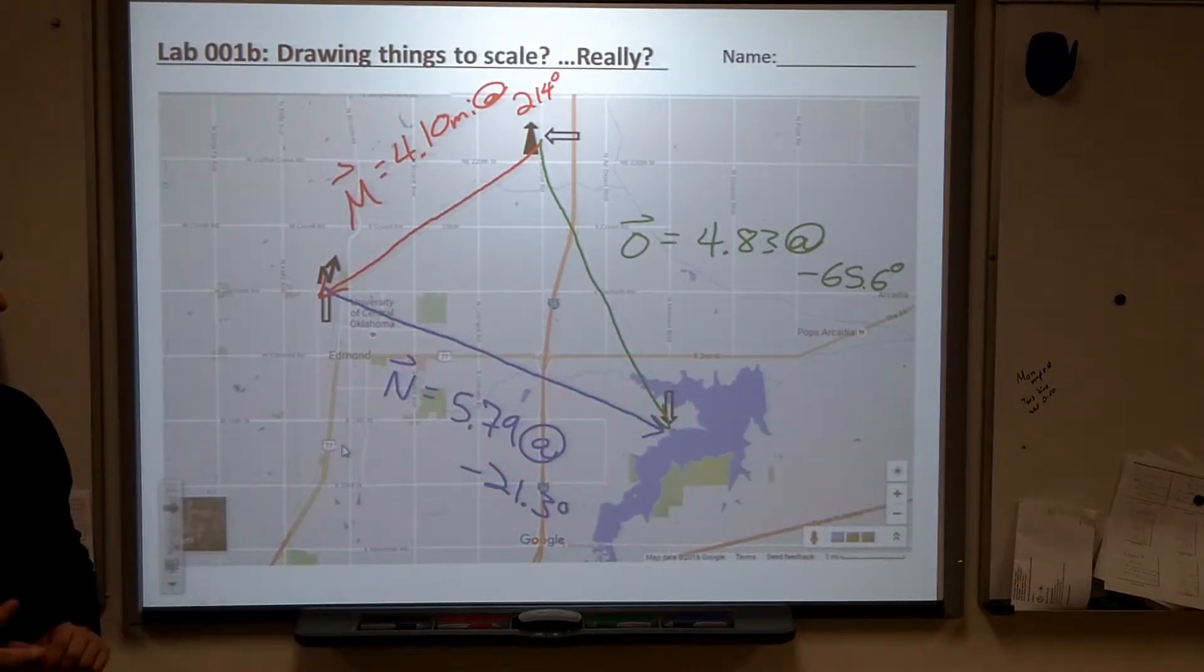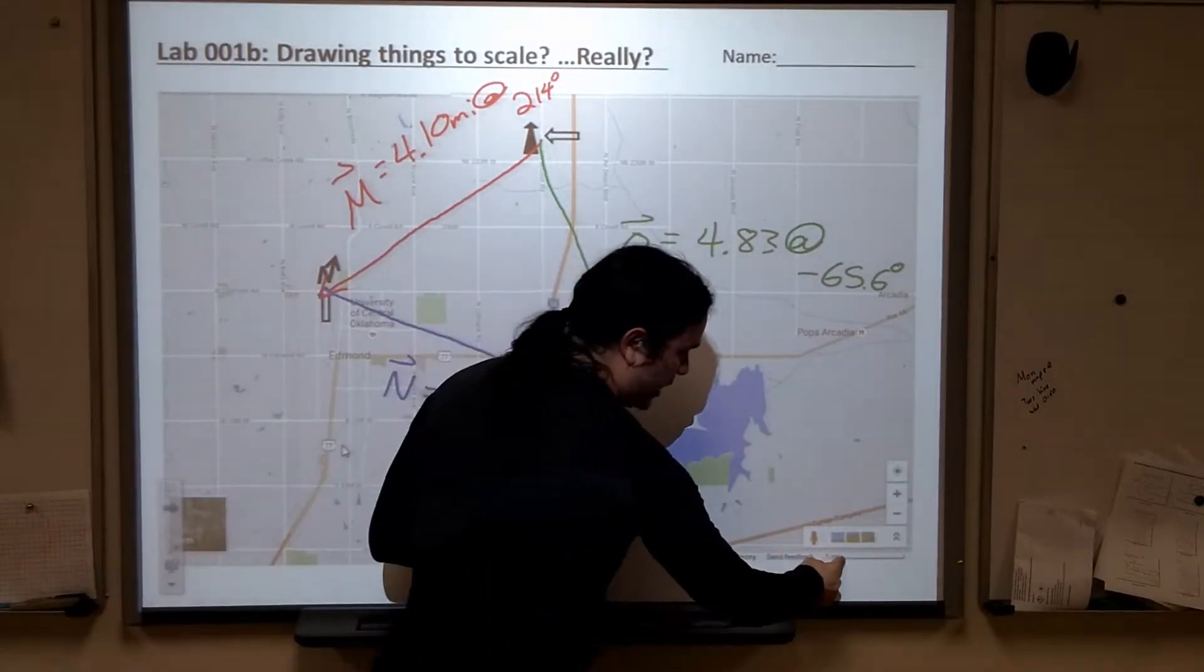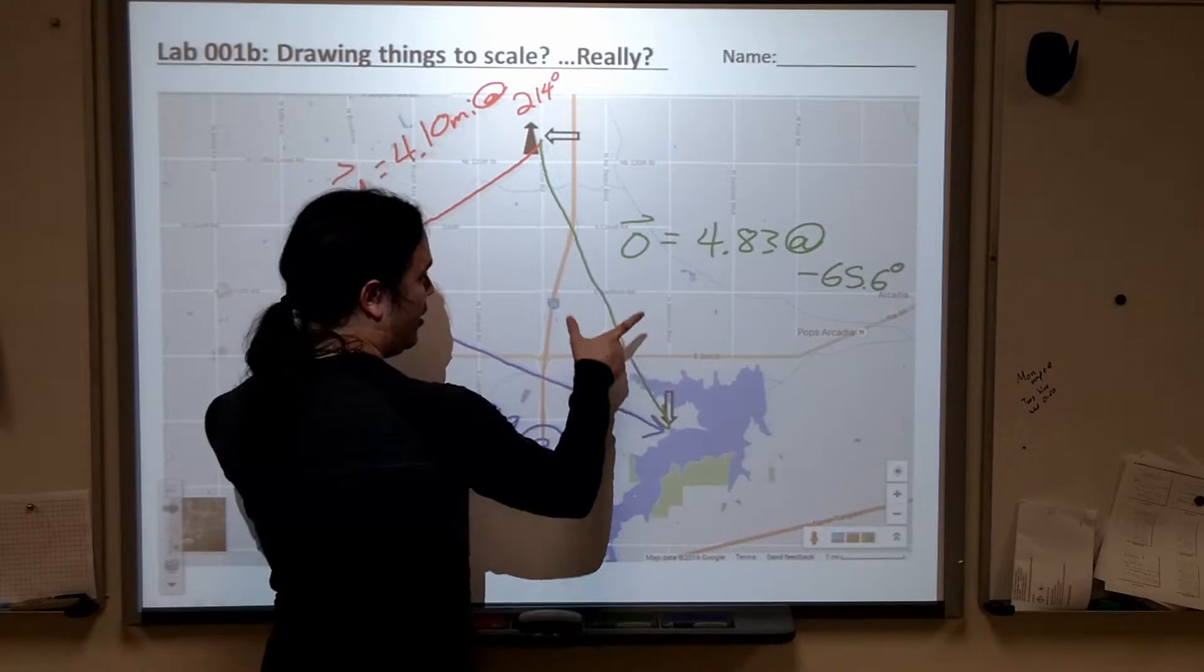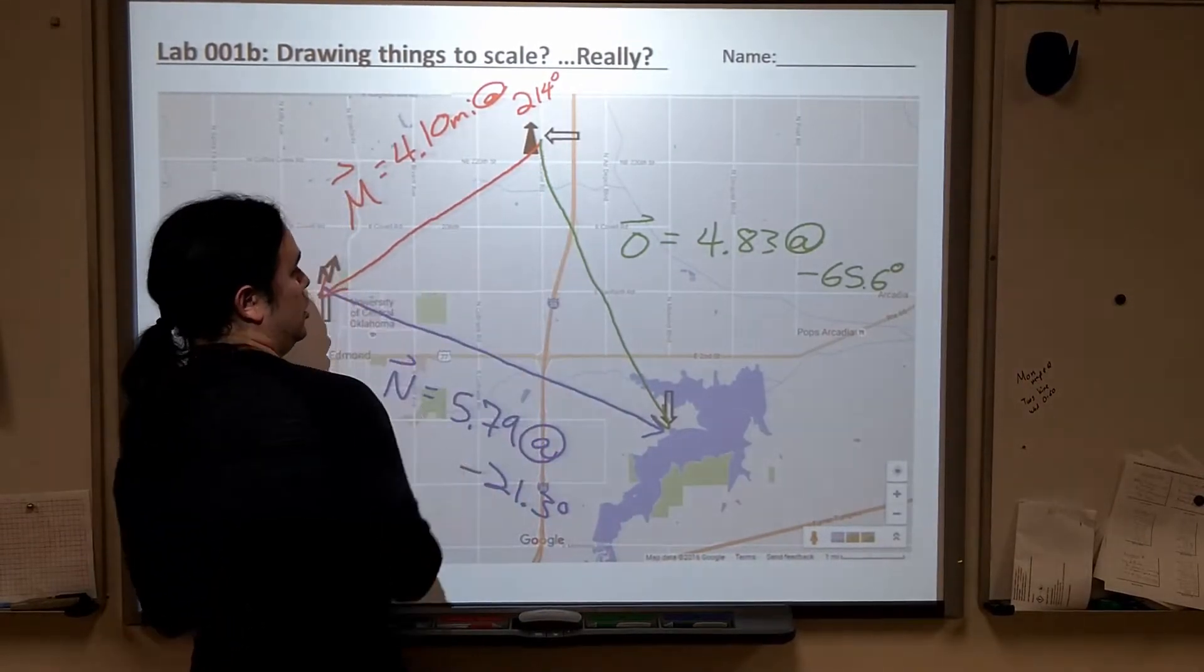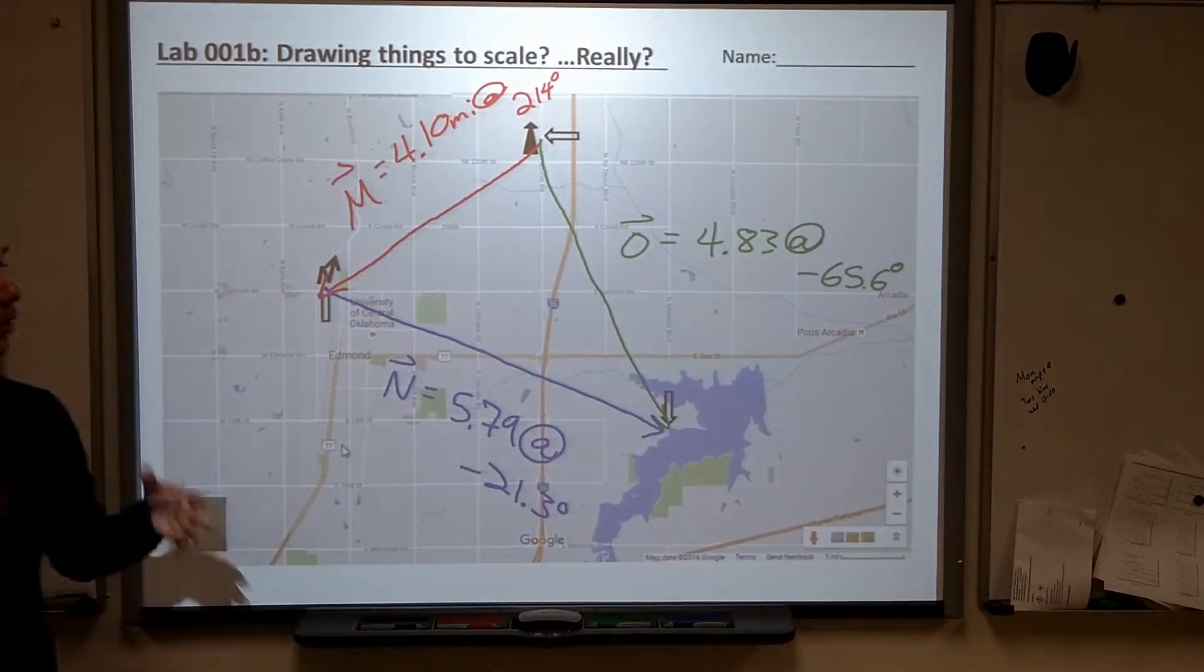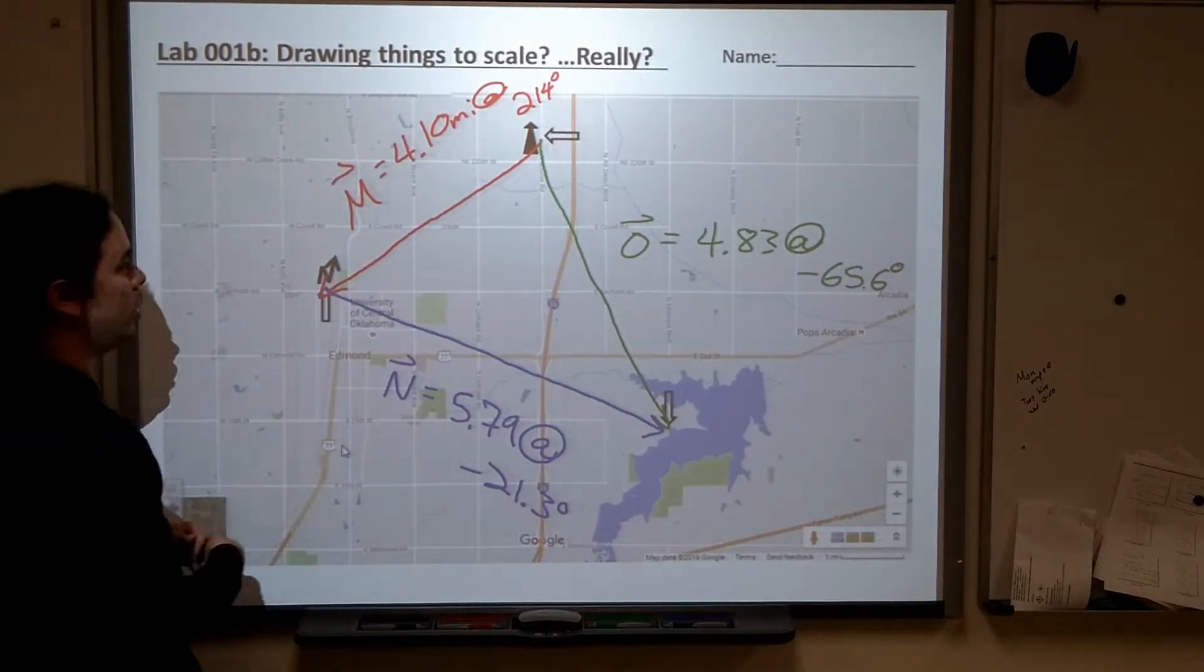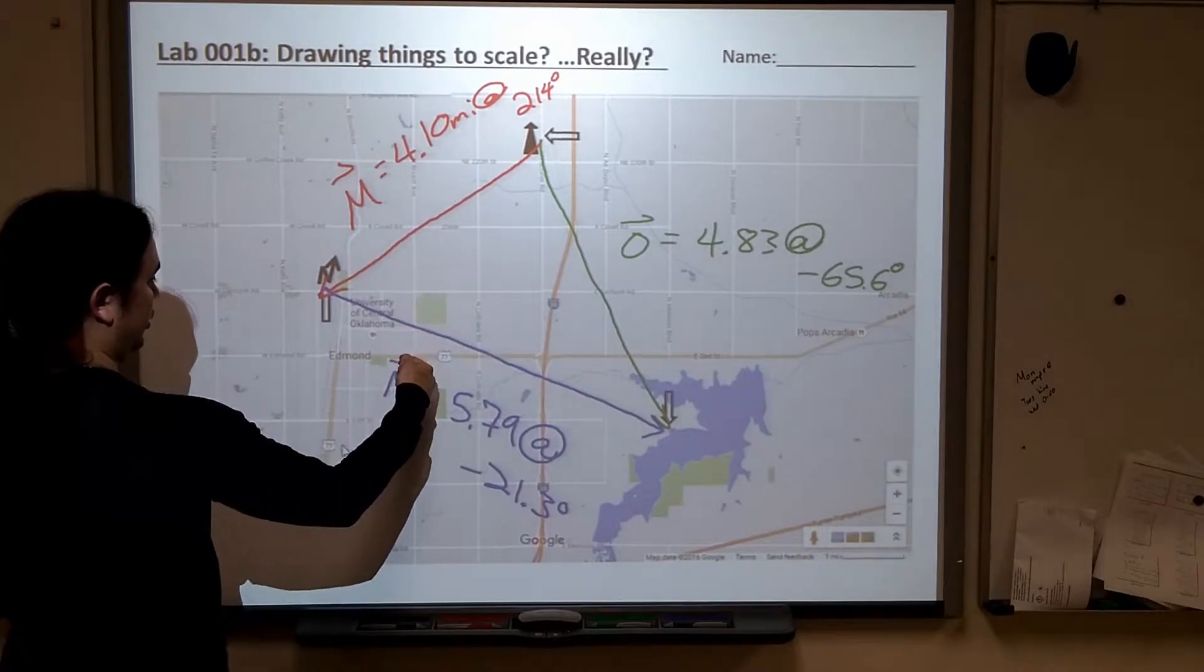Now, ideally, what I want you to do is this. On the page that you have, there's a scale bar right down here, and it says one mile. That's the scale for this map, and it should be pretty much the size of one of these little squares. One of these large city blocks, because they're a mile each between the major roads. Covell, to Danforth, to Edmond,